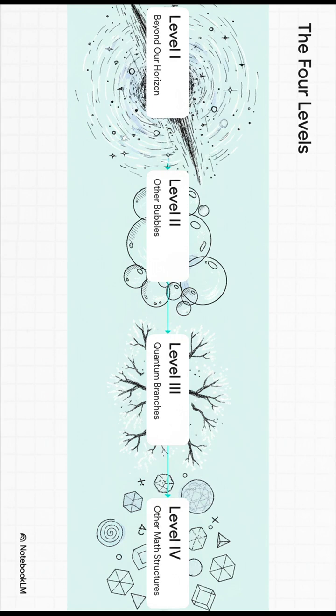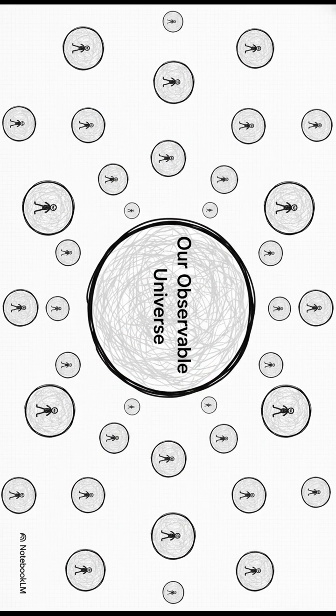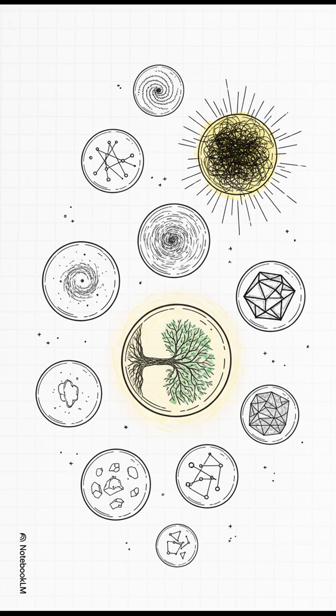Tegmark lays out four levels of the multiverse, and they get progressively weirder. Level 1 is straightforward: infinite space means there's probably another you out there somewhere. Level 2 has bubble universes, each with different laws. It explains why ours is so perfectly tuned for us.